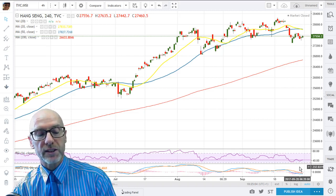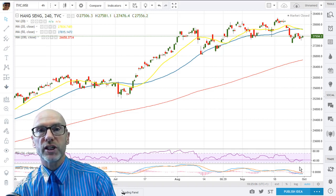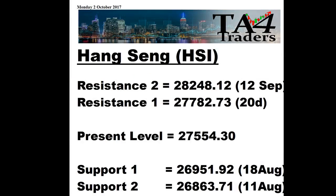Looking at the support and resistance levels: on resistance we've got the 20-day at 27,782.73 and then the high of the 12th of September at 28,248. With support, as I mentioned, the 18th of August is at 26,951.92 and then the 11th of August is 26,863.71.